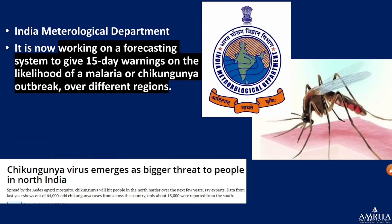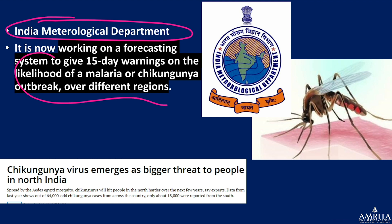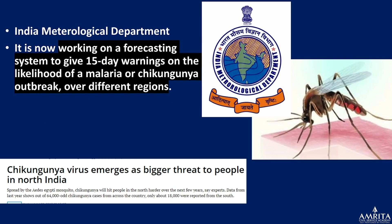The India Meteorological Department (IMD) is also working on a forecasting system that will give a 14-day warning on the likelihood of a malaria or chikungunya outbreak. Based on past analysis or future projections of rainfall and atmospheric conditions, the IMD will provide some indication of possible outbreaks.